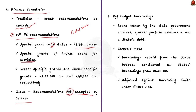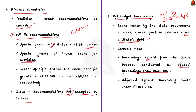The next problem is with regards to off-budget borrowings. Off-budget borrowings are loans taken by state government entities, special purpose vehicles, etc., which are not treated as the state government's own debt but will be repaid through the state government's own budget. This mechanism is used because states have limits on how much they can borrow, so they borrow through government-owned companies and statutory bodies. But now the center has said that off-budget borrowings repaid from the state budgets will be considered the state's borrowing only, retrospectively from 2021-22 onwards, and will be adjusted against borrowing limits set under the FRBM Act.